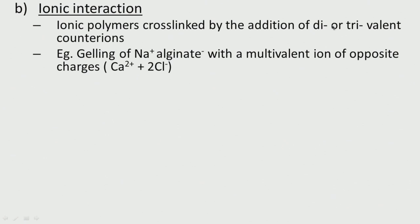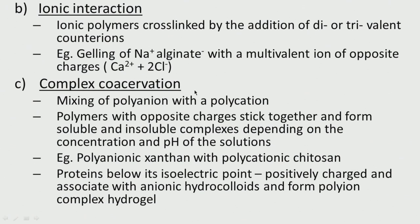Ionic polymers can be cross-linked by the addition of divalent or trivalent counter ions. For example, we can add calcium 2+ to sodium alginate — the calcium has 2+ charge and can connect two different alginate chains, forming a gel. Another approach is complex coacervation, where we mix polyanions and polycations — polymers with opposite charges stick together and form soluble and insoluble complexes depending on concentration and pH. Examples include polyanionic xanthan and polycationic chitosan, which undergo complex coacervation due to their opposite charges.